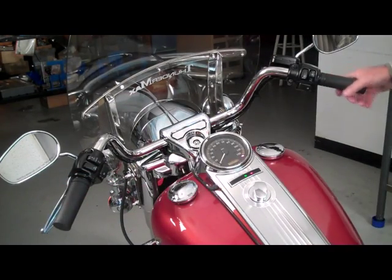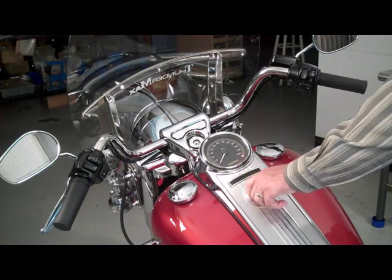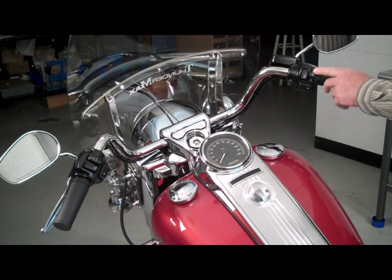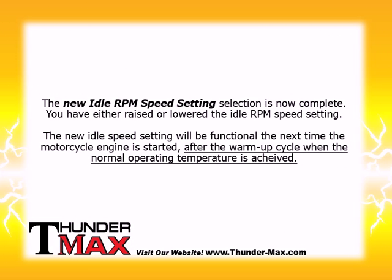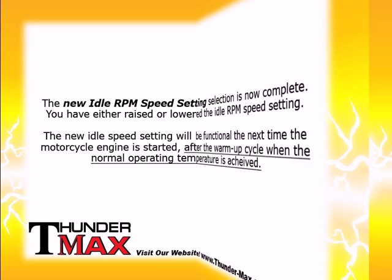Fully pull and release the clutch to confirm your selection. Turn the ignition off, then turn the ignition on and start the bike. The new idle RPM speed setting selection is now complete. You have either raised or lowered the idle RPM speed setting. The new idle speed setting will be functional the next time the motorcycle engine is started, after the warm-up cycle, where the normal operating temperature is achieved.